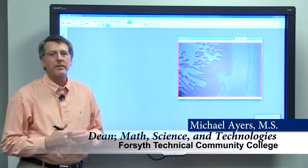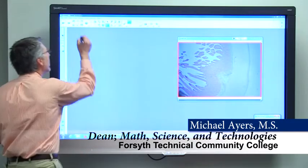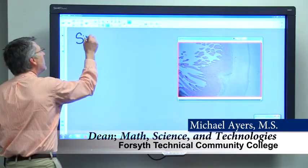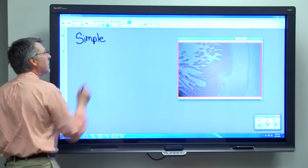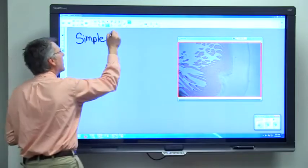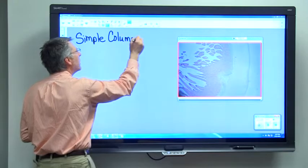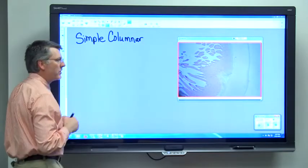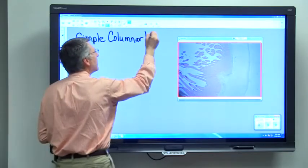The next tissue we want to think about is called simple columnar epithelium. We have simple, one cell layer thick, columnar column-shaped cells epithelium.